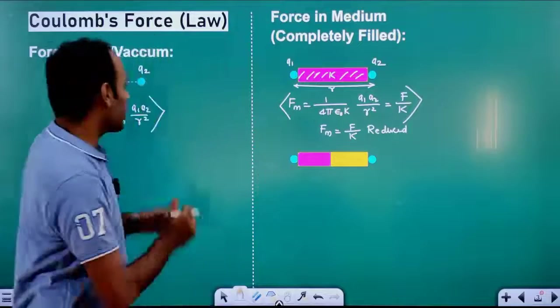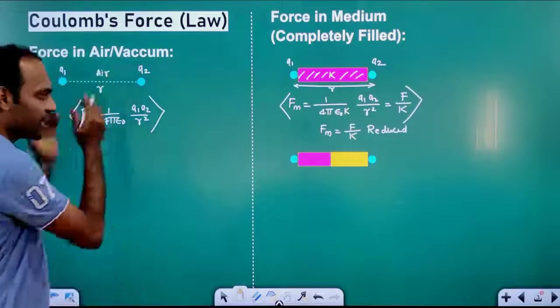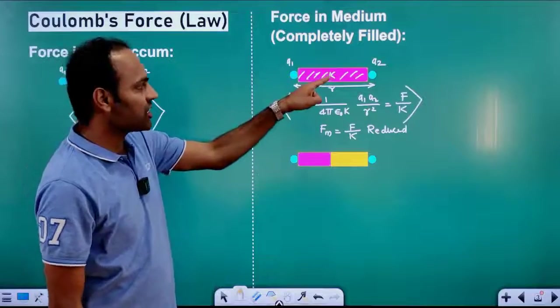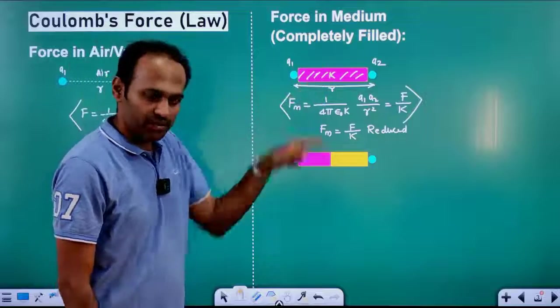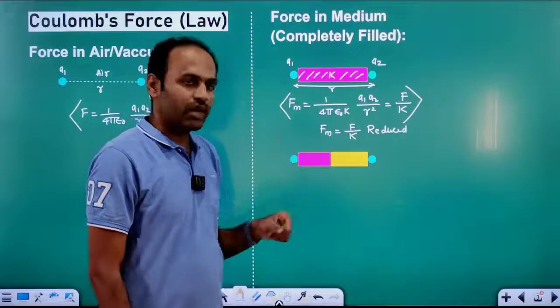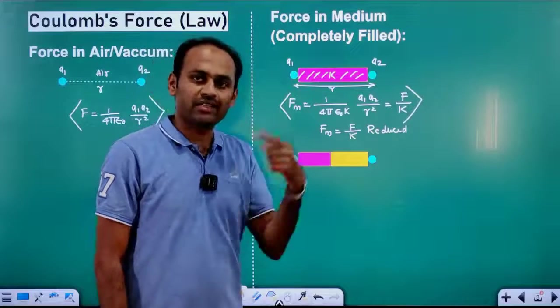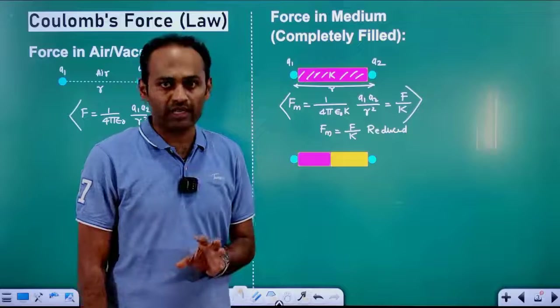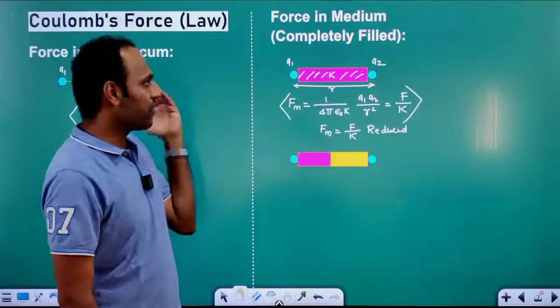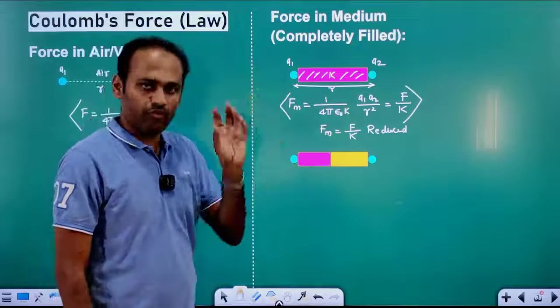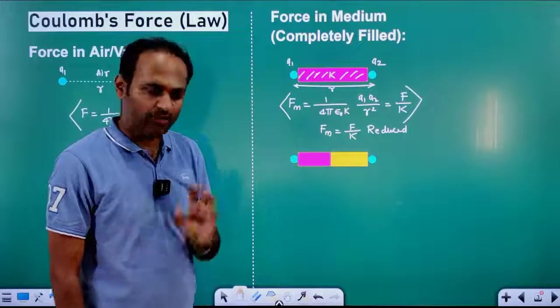For example, if we need 10 N and the dielectric constant of the medium is 2, the new force is 10 divided by 2, which is 5 N. So the force has been reduced.